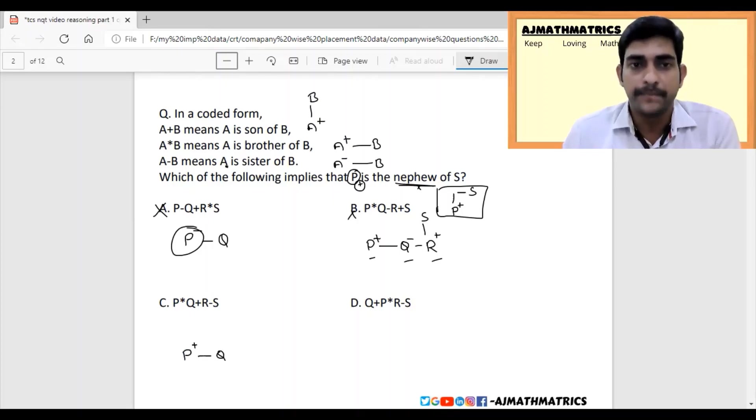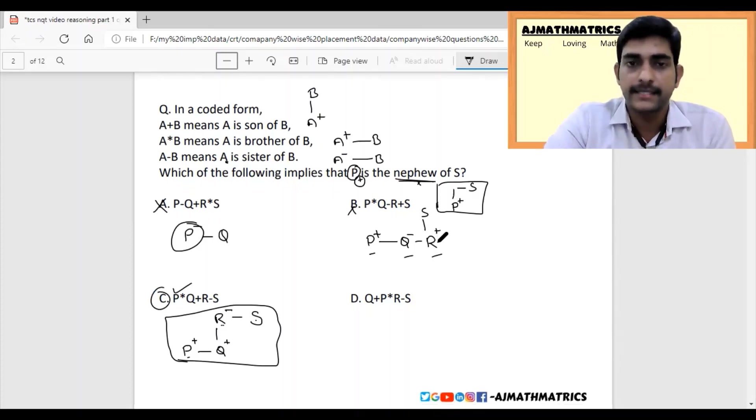Option C: P star Q means P is the brother of Q. Q plus R means Q is the son of R, and R minus S means R is the sister of S. Here we get P is the nephew of S because S's sister is R, and R's children are P and Q. So sister's son is nephew. Hope I am clear. Let's move to the next question.